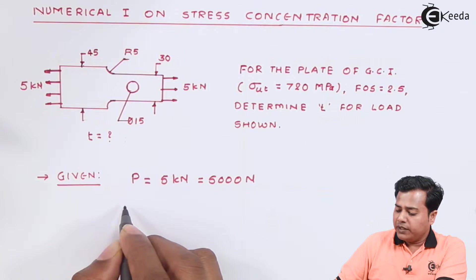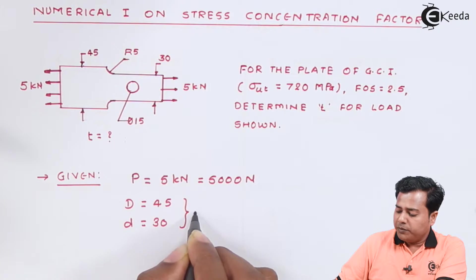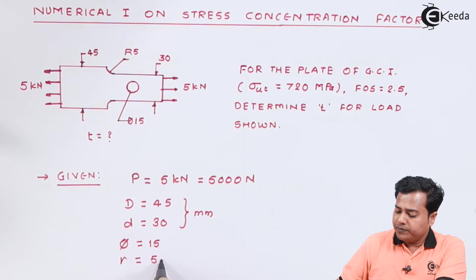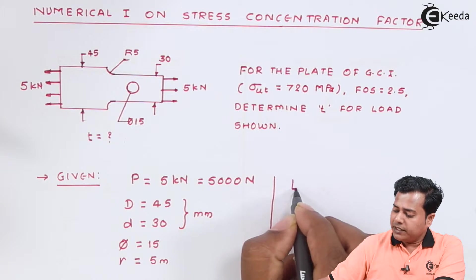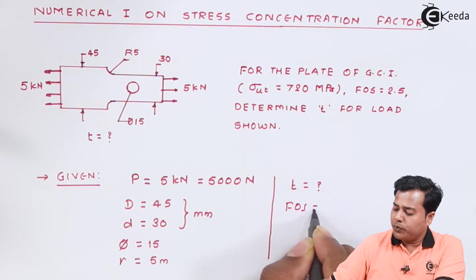We have been given the larger diameter D is equal to 45 and the smaller diameter d equal to 30, both in millimeter. We also have been given the diameter of hole as 15. We have been given the radius for the fillet is equal to 5 millimeter and we need to evaluate thickness t when factor of safety given is 2.5.